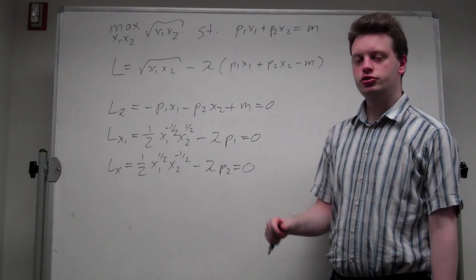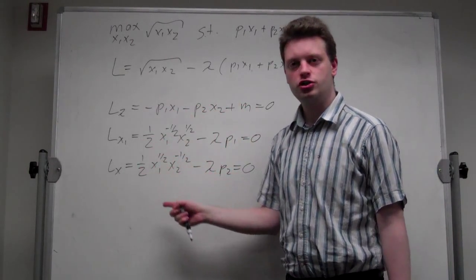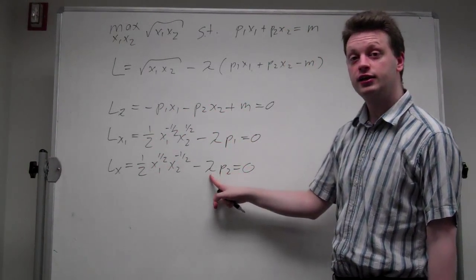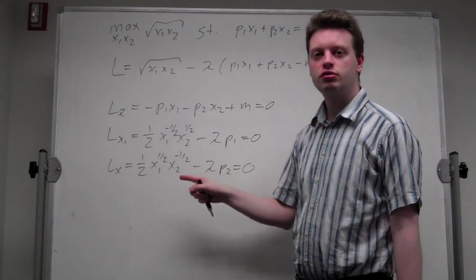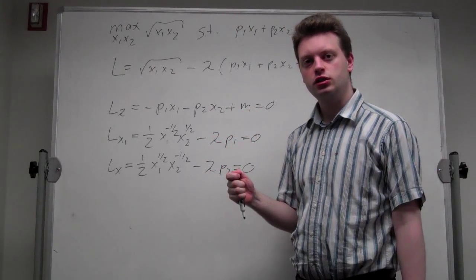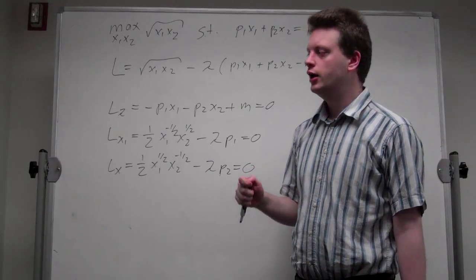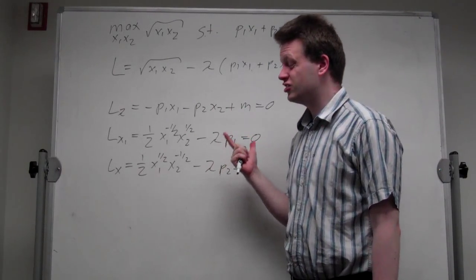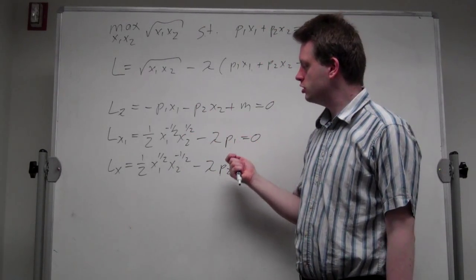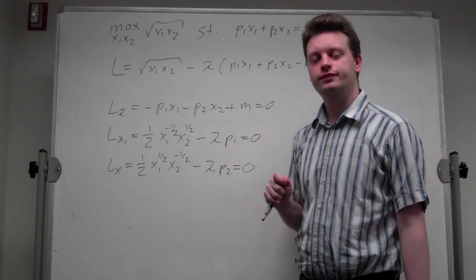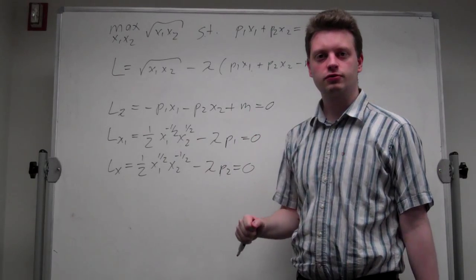So we have our three first order conditions. Now we could solve these three equations for x1, x2, and lambda to obtain our unique solution, and then take the derivative with respect to the parameter we are interested in to obtain a comparative static result. However, there are cases where we cannot solve the system of equations and we still want a comparative static result. In these cases there is the implicit function theorem that allows us to do so.